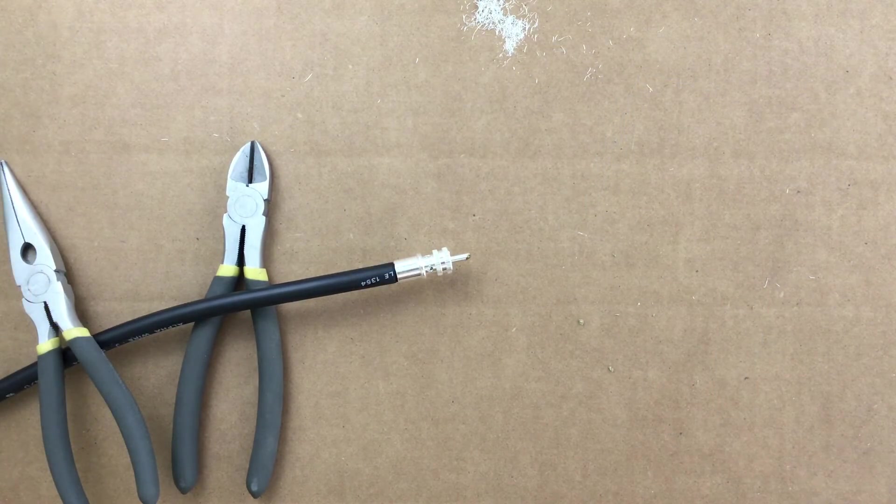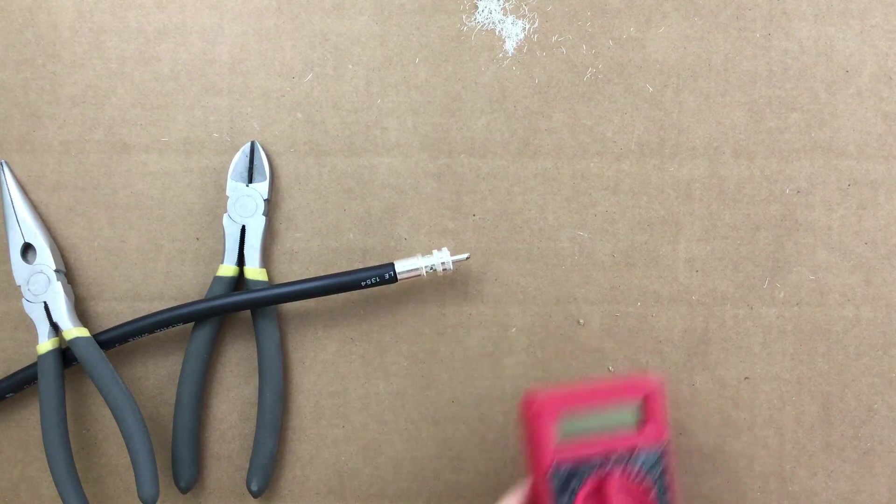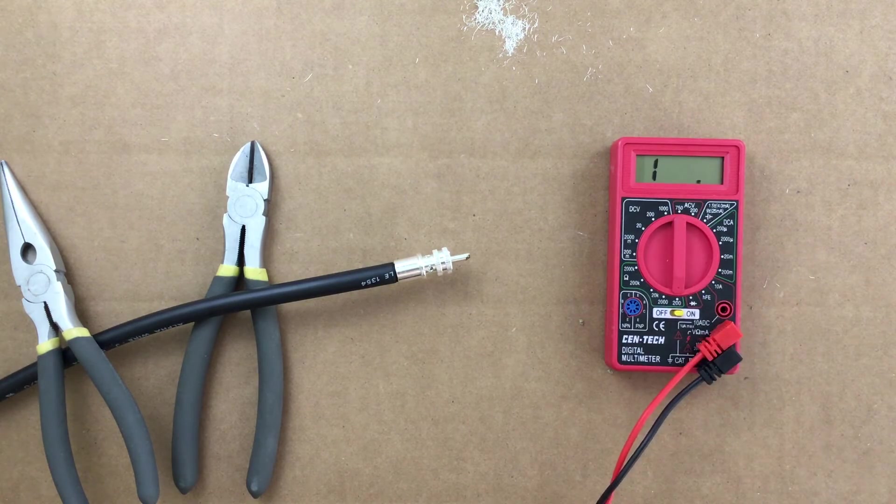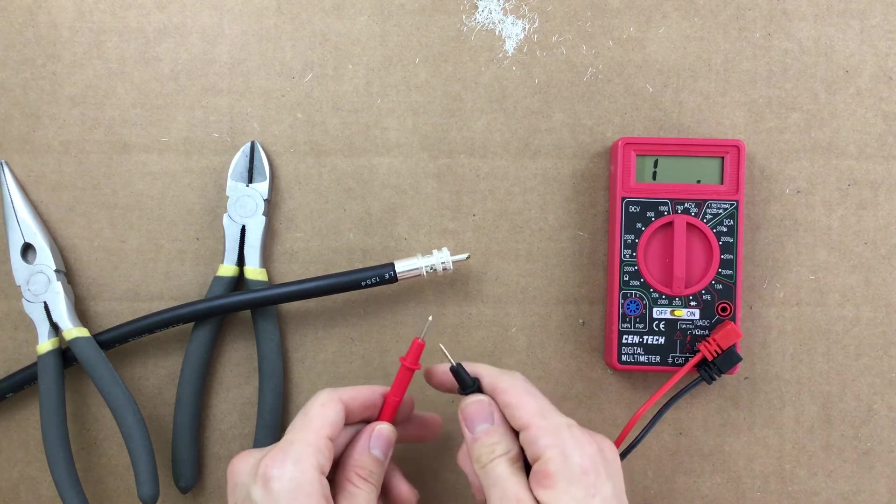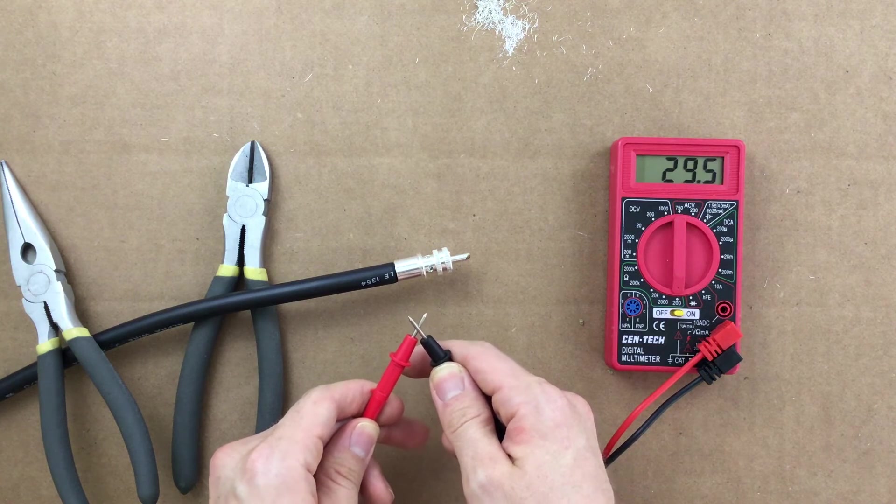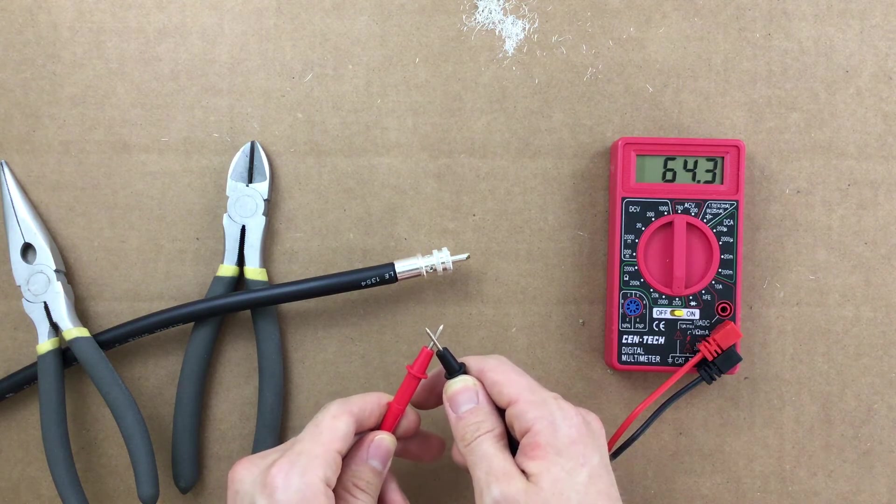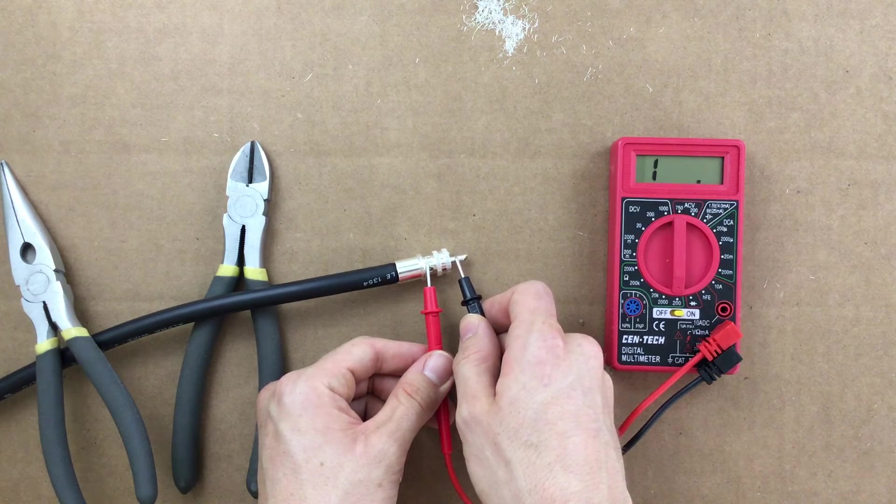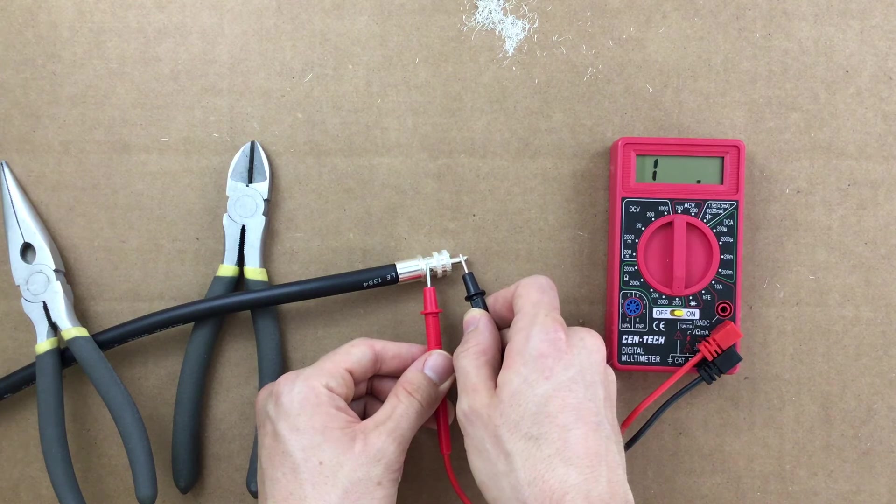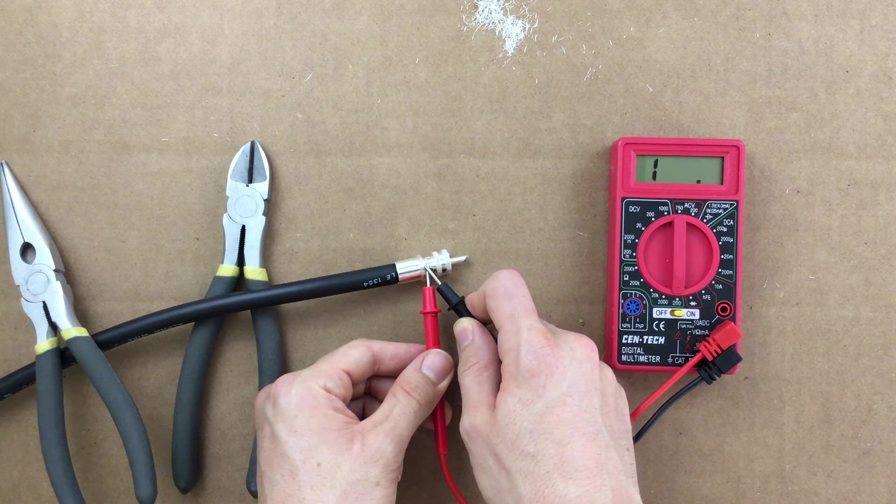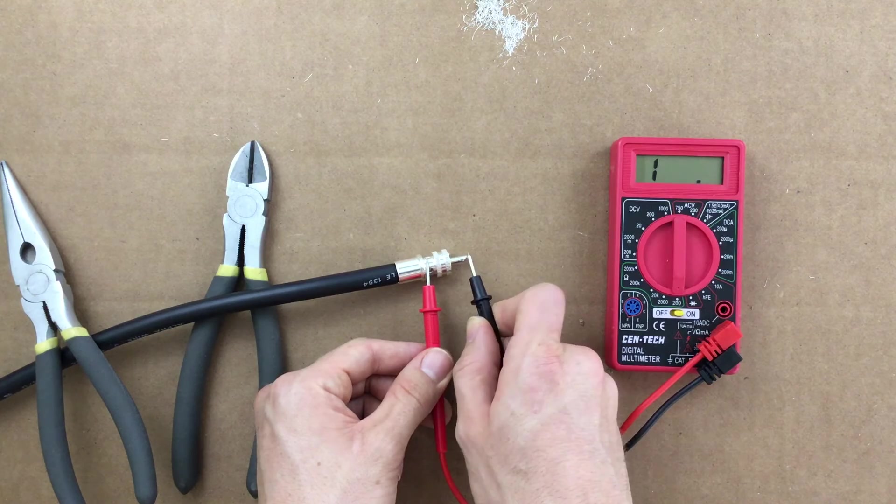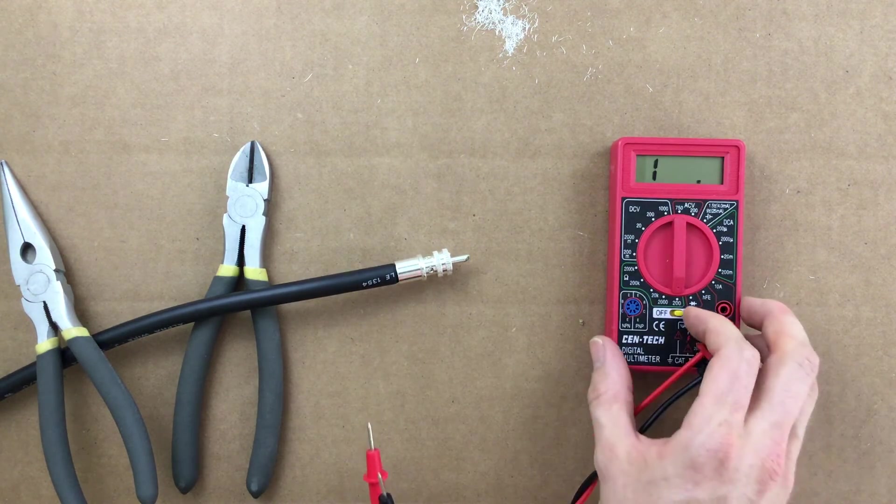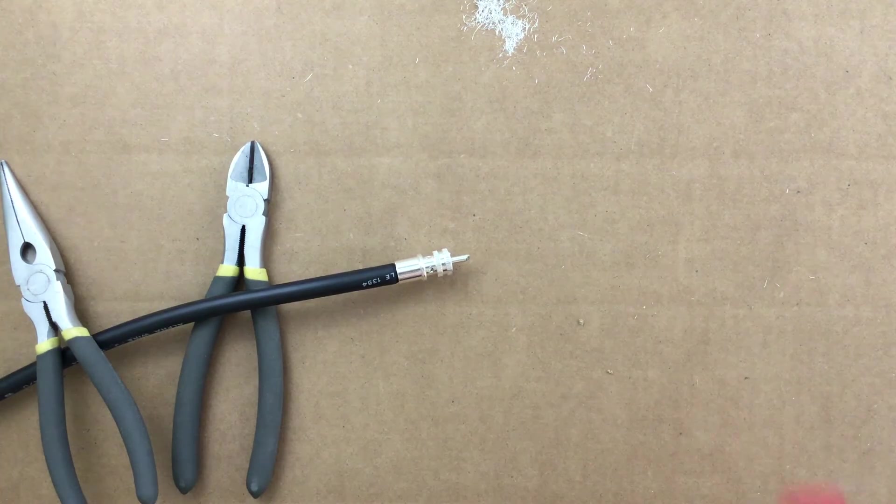Now we want to test our work and make sure we do not have any internal shorts. Grab an ohmmeter and set it to the lowest ohm scale. Touch the two leads together and it will show you little to no resistance. This is what you do not want to see in your installation. Touch one lead to the body and one lead to the center pin of the connector. My meter is reading that there is infinite resistance, so my installation is in perfect working order. Be sure to turn off your meter when done to conserve its battery.